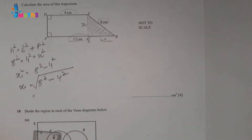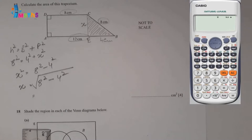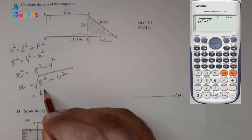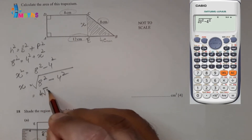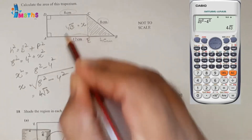Using the calculator to find the value of x: the square root of 8 squared minus 4 squared equals 4 root 3. So this x value is 4 root 3.